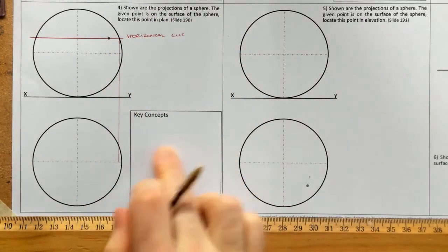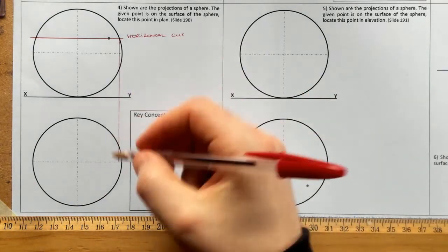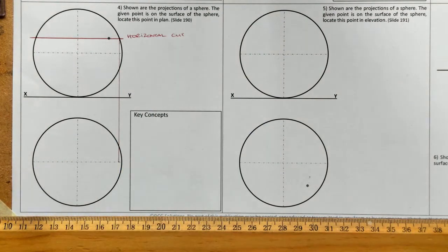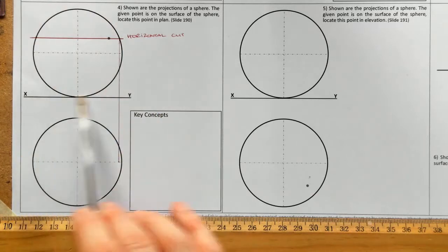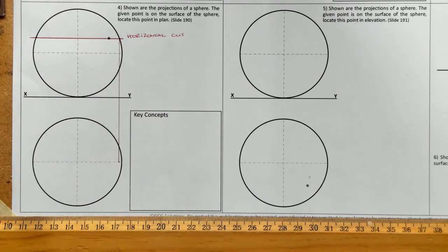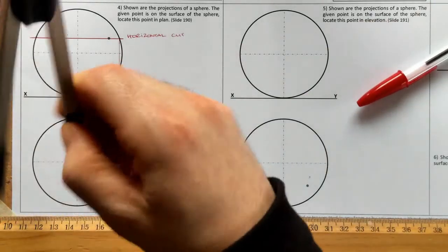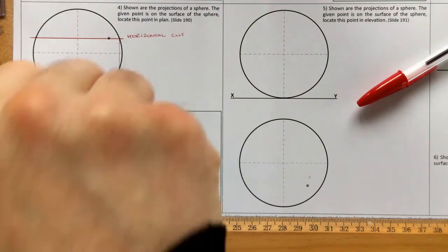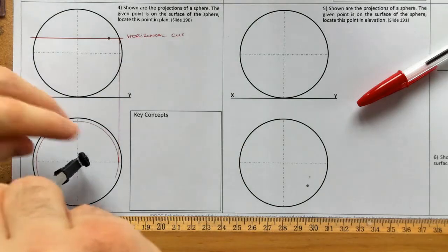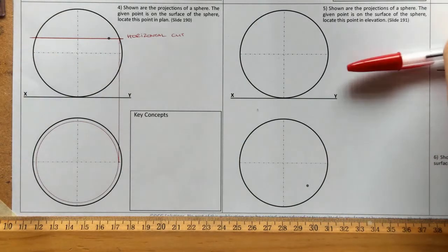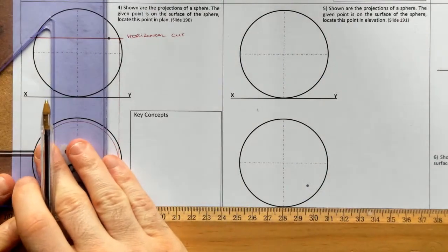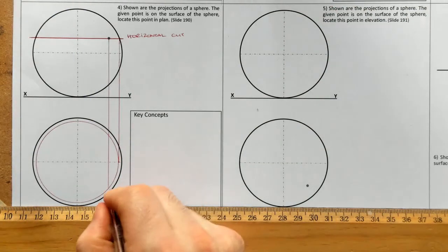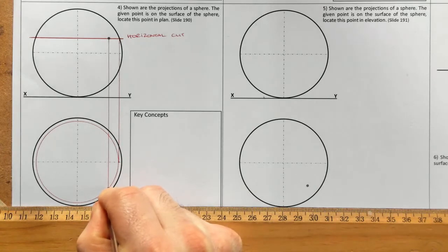That point needs to be projected down here, since that's our axis line running across. As we look down on top, that circumference line would be seen as a straight line in plan. Now I put in that cut surface, which we would see in plan view as another circle — just a smaller one. Put in that circle, project the point down, and there — that is where my point is in the plan view.